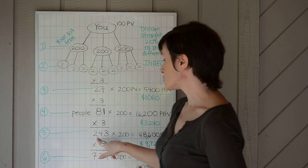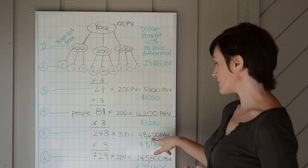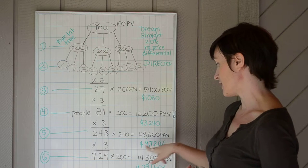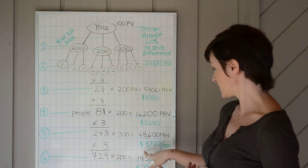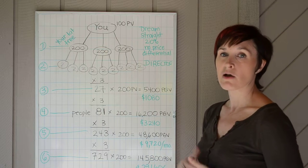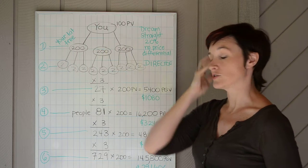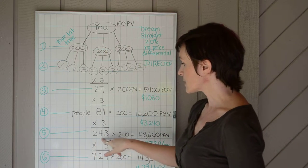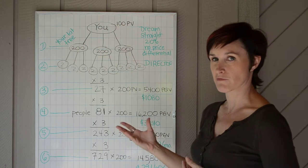Take it down another level, 243 people, 200 PV, 48,600 PGV, and your income is now close to $10,000 a month. That's $9,720 a month only on turnaround kits, not including any other business you do. And if you're starting to get scared at this number right here, realizing you need to meet with 243 people, don't.